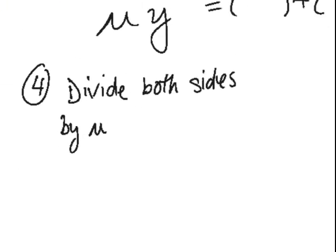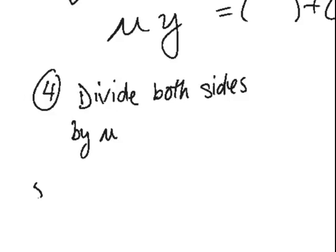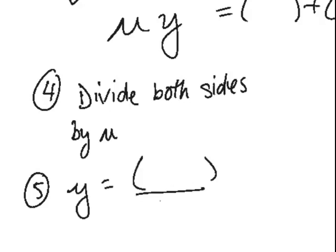And then you have a general solution. And just like before, if you have initial values, then you can solve for c and plug back in and get a particular solution.